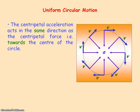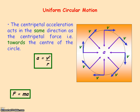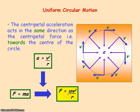The centripetal acceleration of the object acts in the same direction as the centripetal force — that is, towards the centre of the circle. Centripetal acceleration is given by the equation a equals v squared divided by r, so the speed squared divided by the radius of the circle. Using resultant force equals mass times acceleration, we find the centripetal force by substituting in the centripetal acceleration, giving F equals mv squared divided by r. This force must act towards the centre of the circle for the object to follow a circular path.